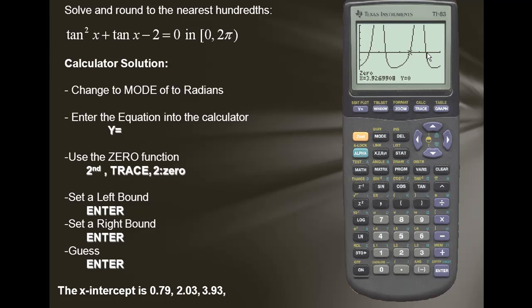We'll calculate the last zero in the interval from zero to 2π. So we'll enter the calculate. We'll use the zero function. We'll set a left bound. We'll set a right bound. For guess, we'll press enter. And our last intercept point is 5.18.